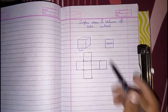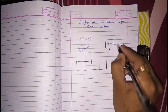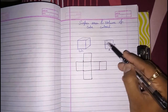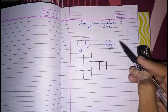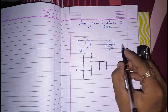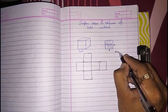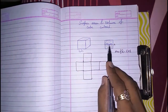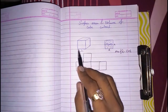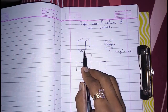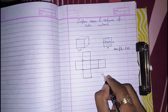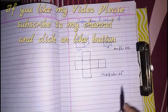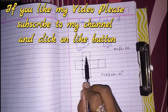The surface area of a cube — we know the area of a square is length into length, that is L into L, or L squared. There are actually six squares, so if we want to find the total surface area — the four walls, the upper side, and the lower side — the formula for total surface area of a cube is 6L squared.